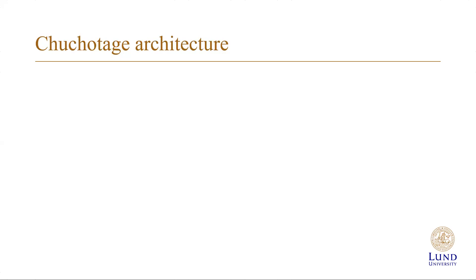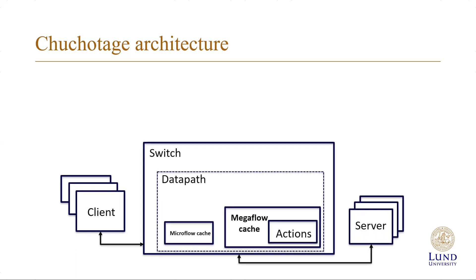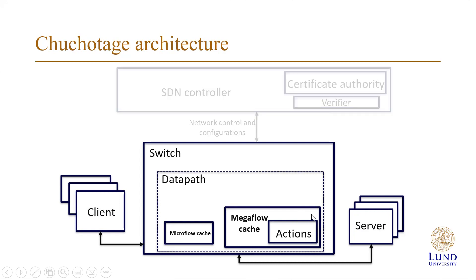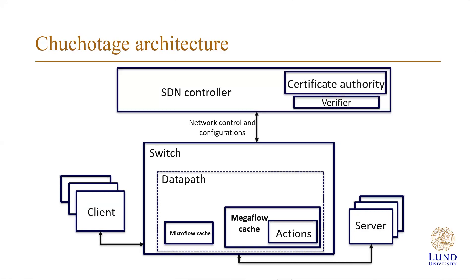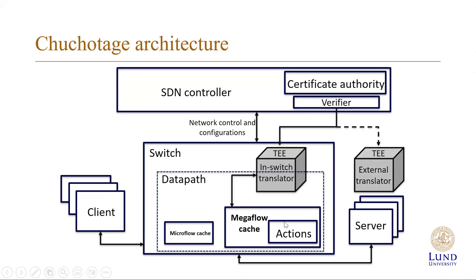Now I would like to explain our designed architecture for ChoChoTage. We have different components such as clients that are IoT devices and servers or backend systems. The clients communicate to the servers through Open vSwitch. On top we have an SDN controller that controls and configures the whole network. The components we add in our architecture are a verifier network function, a certificate authority, a trusted execution environment, and translator boxes inside the TEEs.